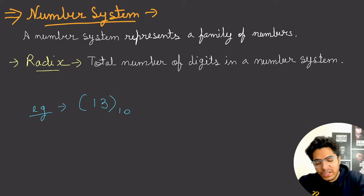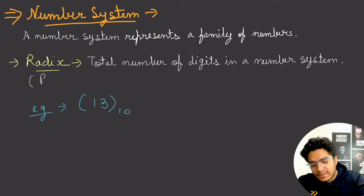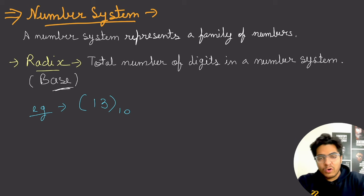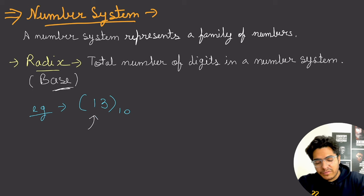Now let's understand the concept of base or radix. Base is the total number of digits in a number system. For example, take the number 13 with base 10. Here, 1 and 3 are the coefficients or magnitudes, and 10 is the base or radix.